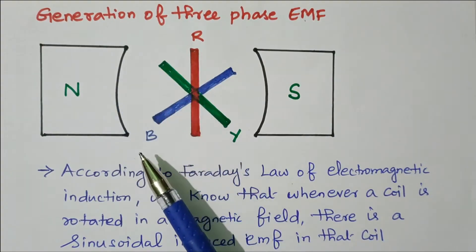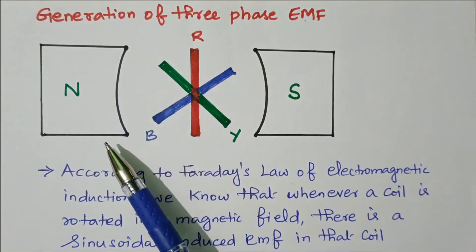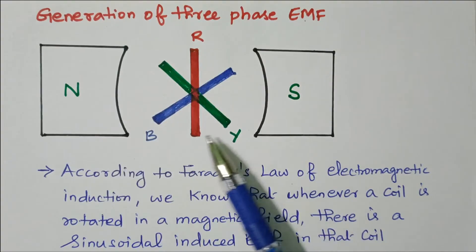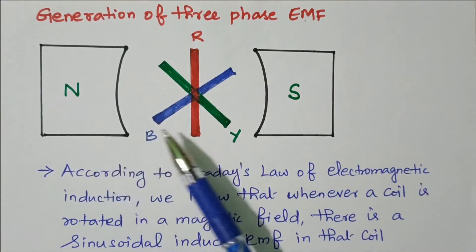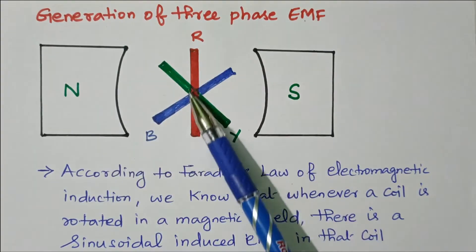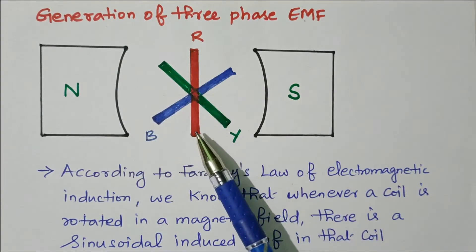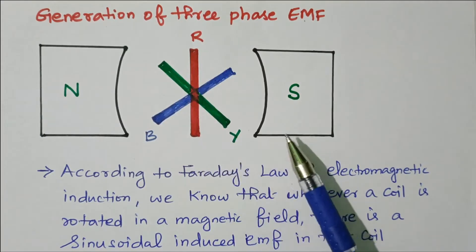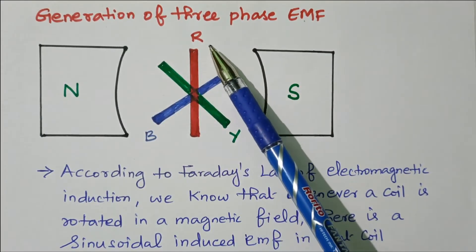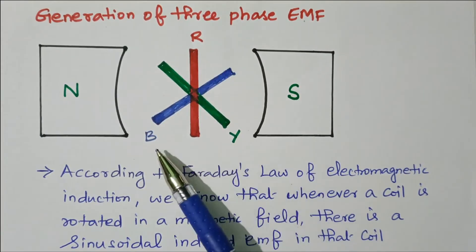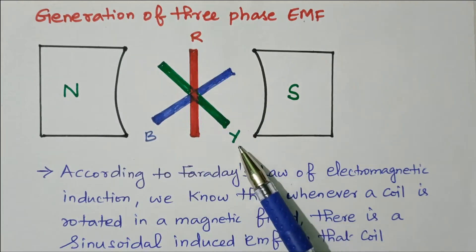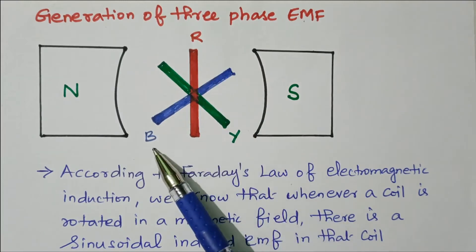Let us consider this diagram. There is a magnet available on both sides — N pole and S pole. There are three conductors available. Because of three-phase, we have three conductors named as R, Y, and B: Red phase, Yellow phase, and Blue phase.